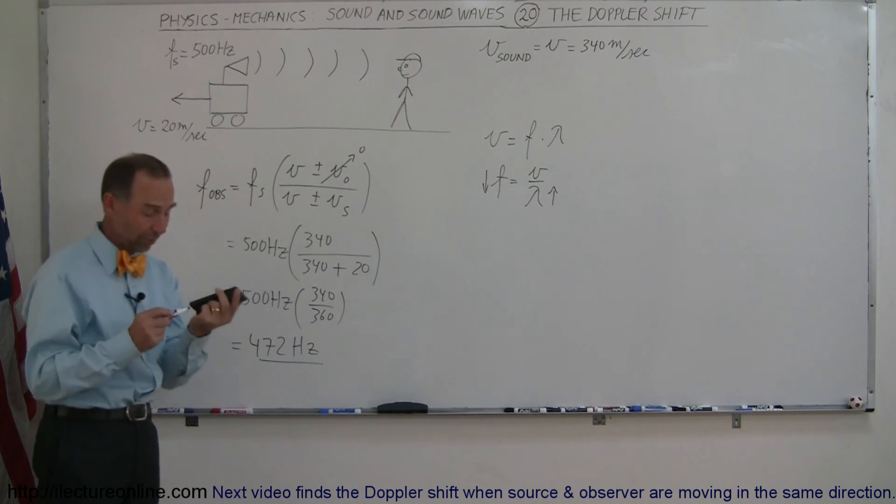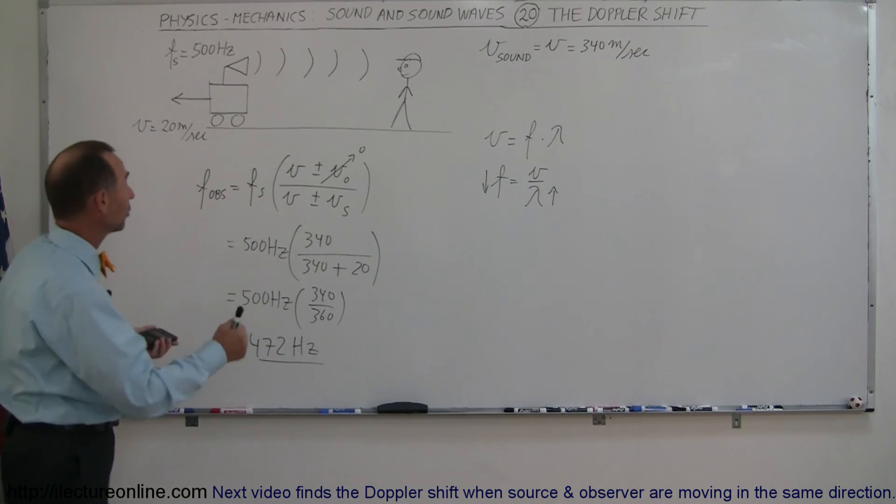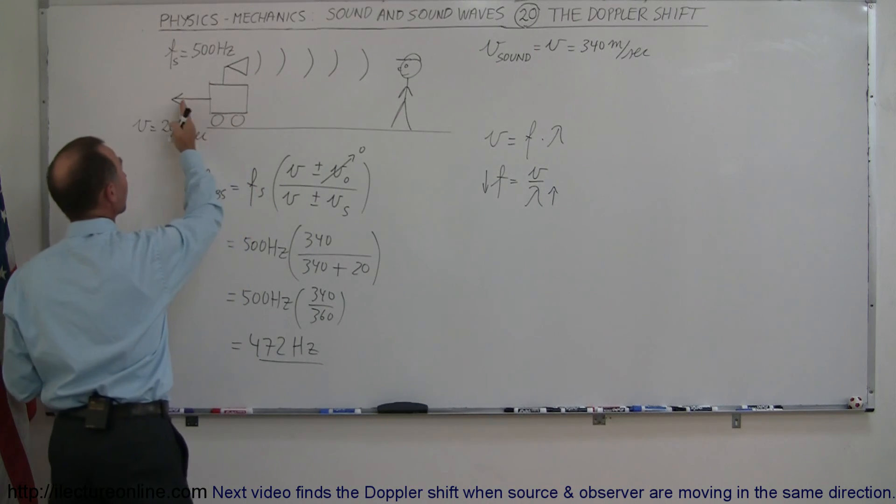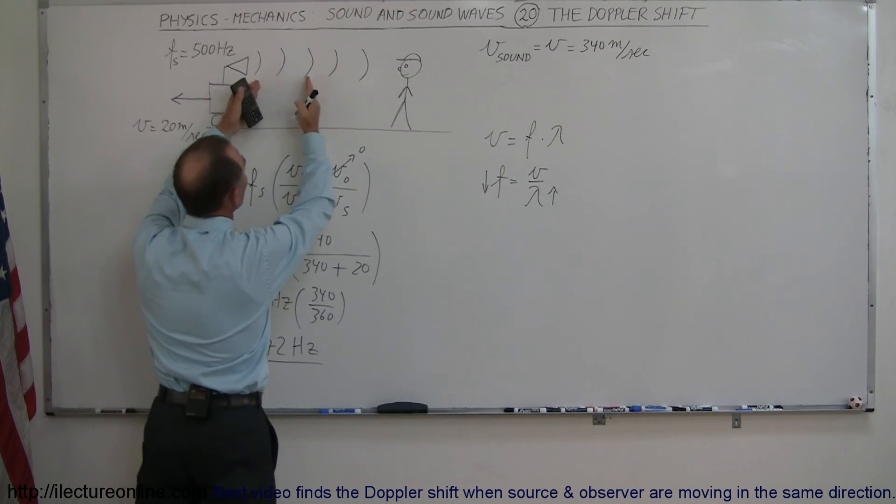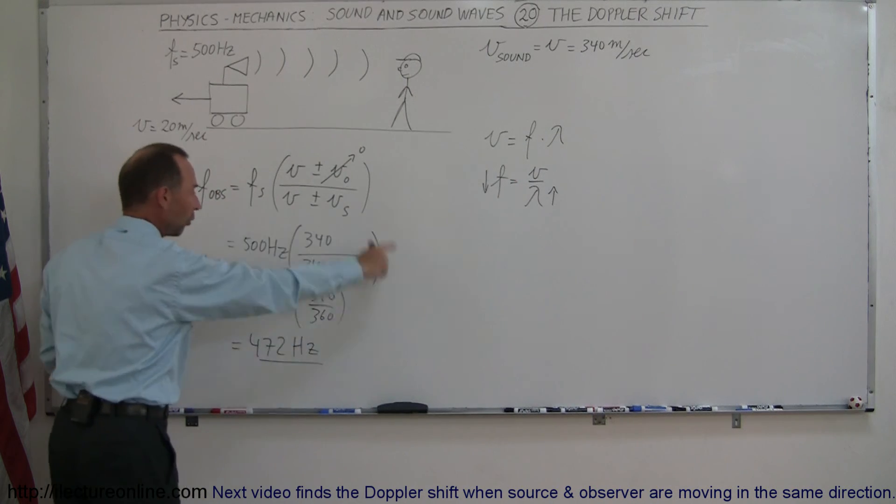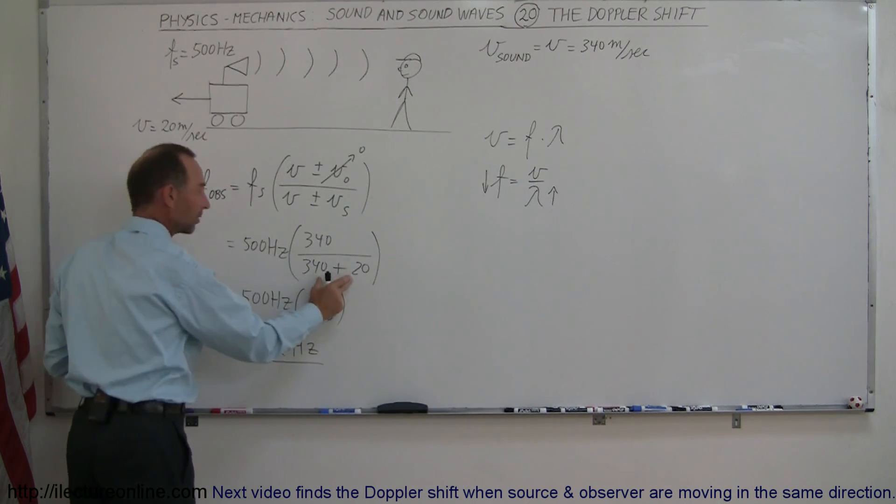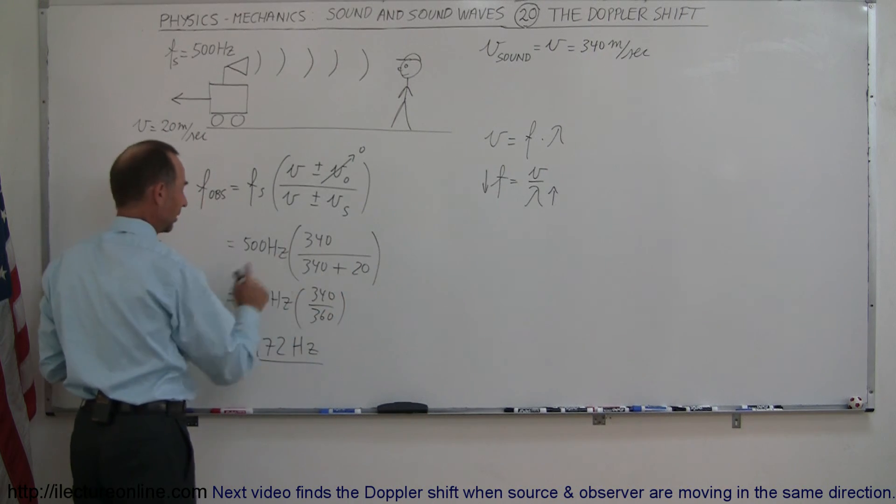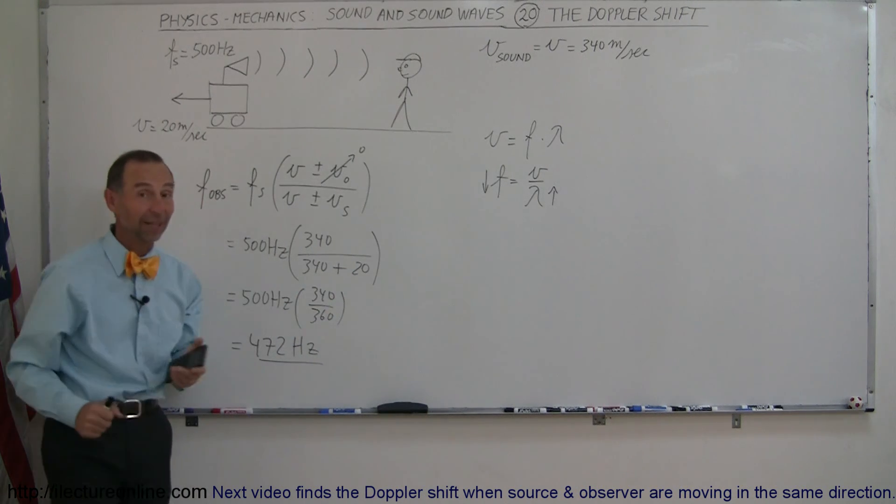Equal to 472 hertz. That's how we determine that. So again, every time we look at the situation, we realize the car is moving away. Wavelengths are going to be larger. Larger wavelengths means shorter frequency. What sign do we need there so that this whole thing will be a smaller number? A bigger denominator means we put a plus there, and we get the right answer. That's how we do that.